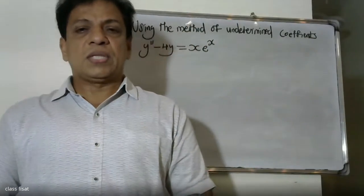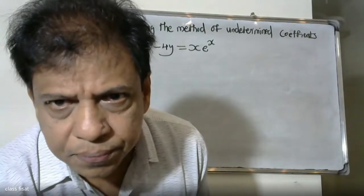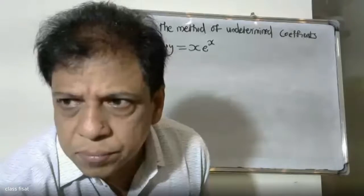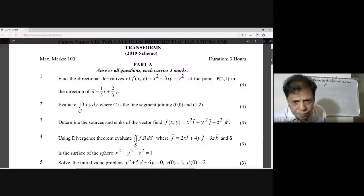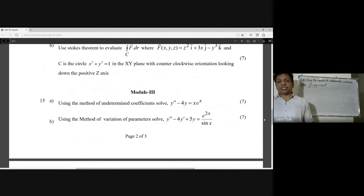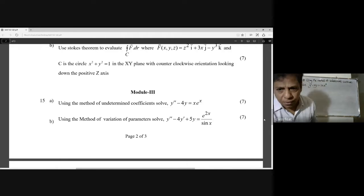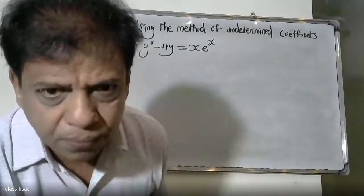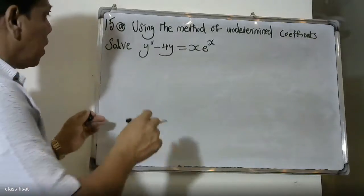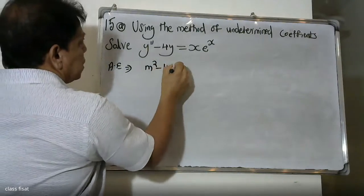Good morning students. We are solving y double dash minus 4y equal to x into e raise to x using the method of undetermined coefficients. We have broken it down step by step. First we write the auxiliary equation, which is m squared minus 4 equal to zero.